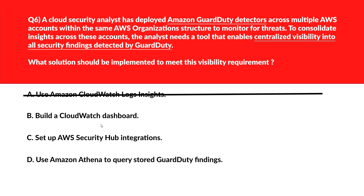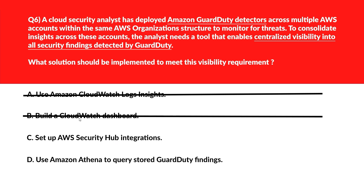Option B says: build a CloudWatch dashboard. CloudWatch dashboards visualize metrics, not detailed findings from GuardDuty across accounts. Let's delete it. Option C says: set up AWS Security Hub integration. Security Hub integrates with GuardDuty and provides centralized aggregation and visibility of findings across organizational accounts. Let's keep this.